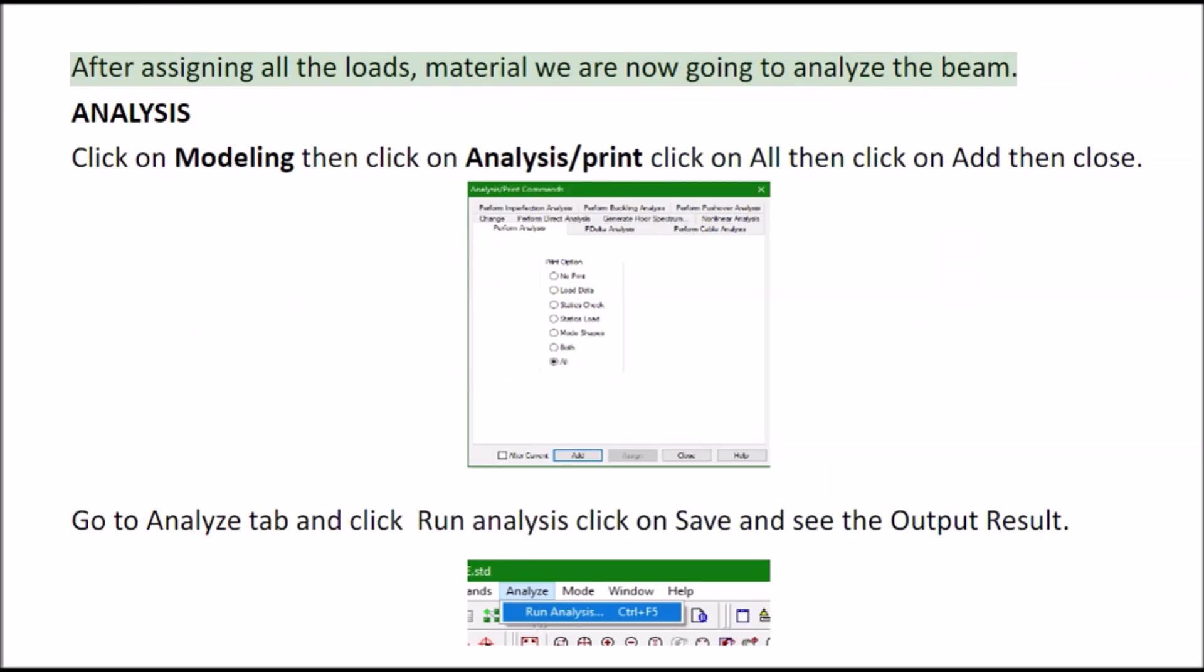After assigning all the loads material we are now going to analyze the beam. Analysis click on modeling then click on analysis print click on all then click on add then close. Go to analyze tab and click run analysis click on save and see the output result.